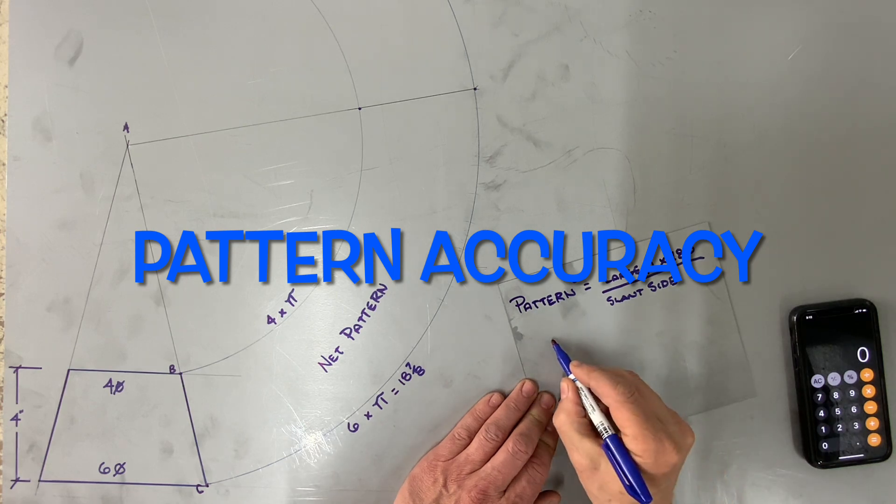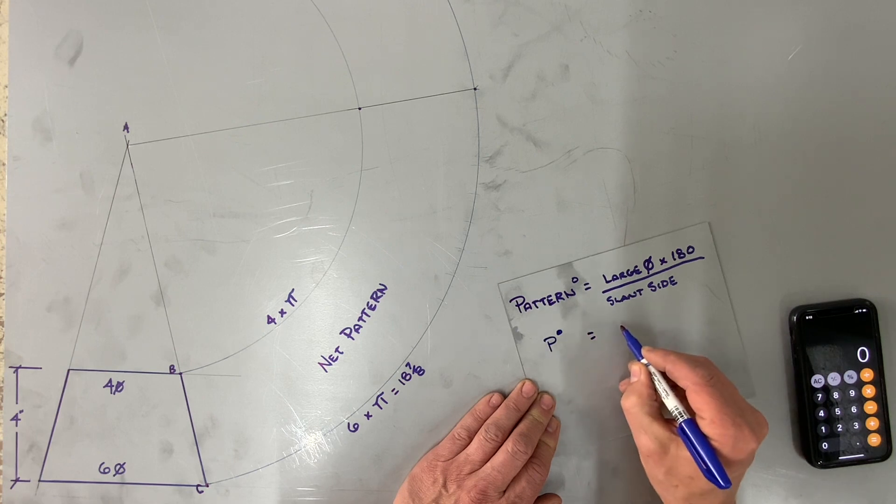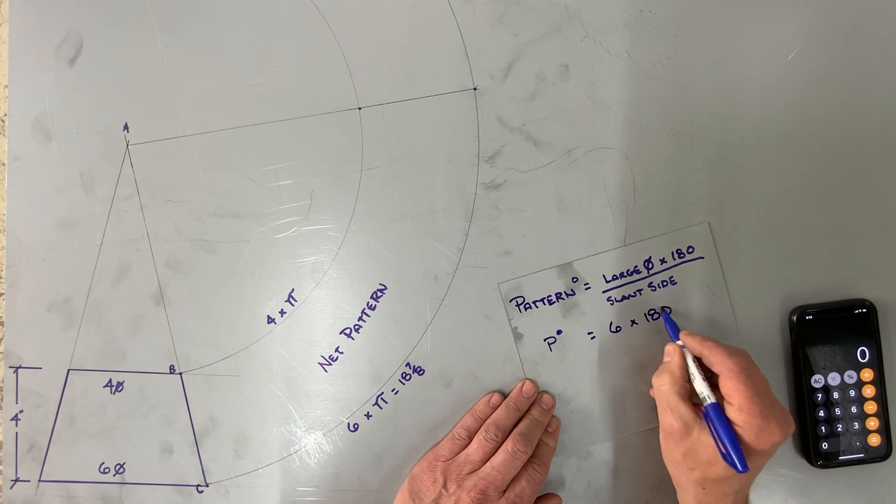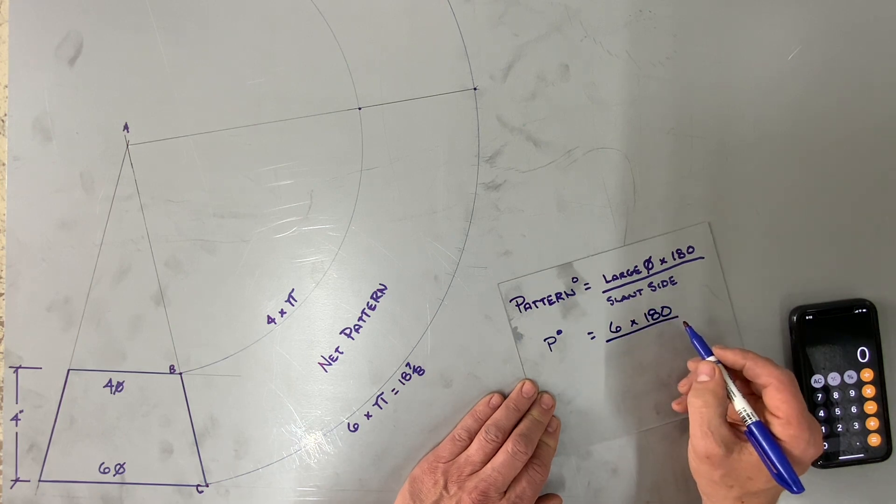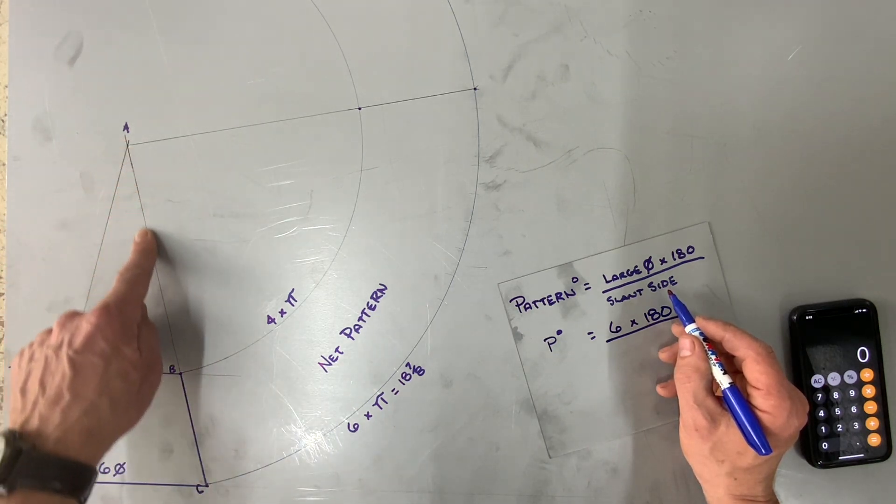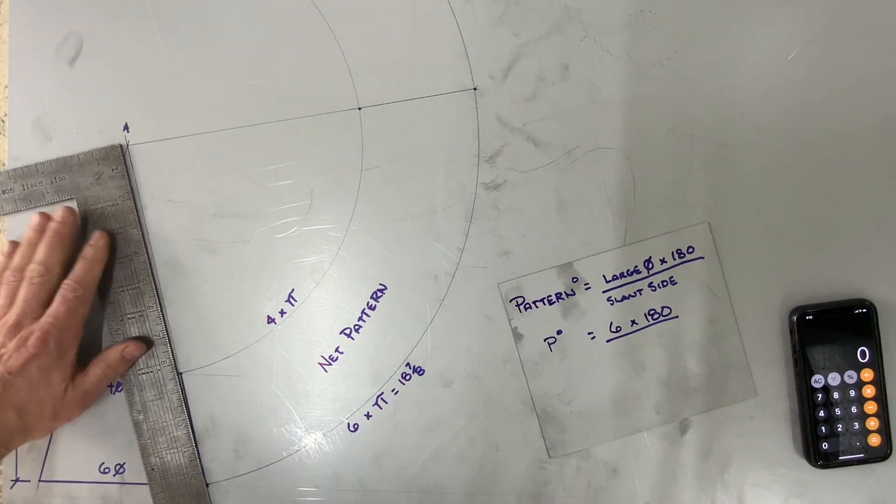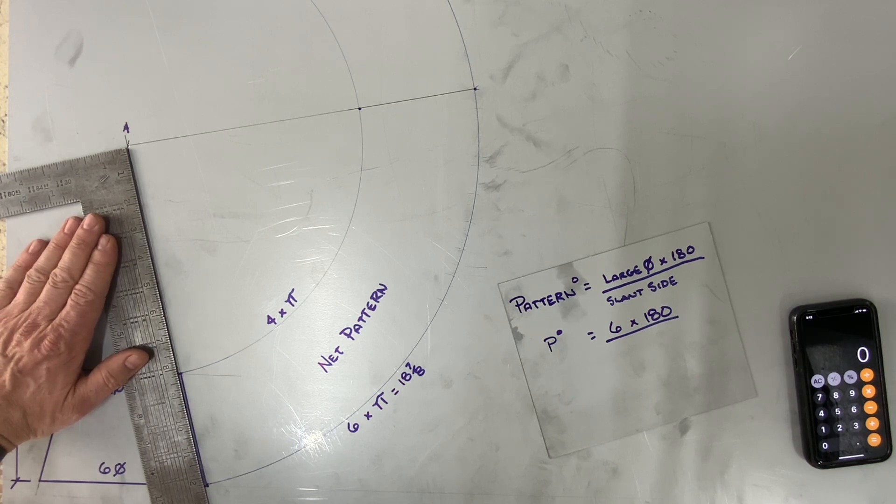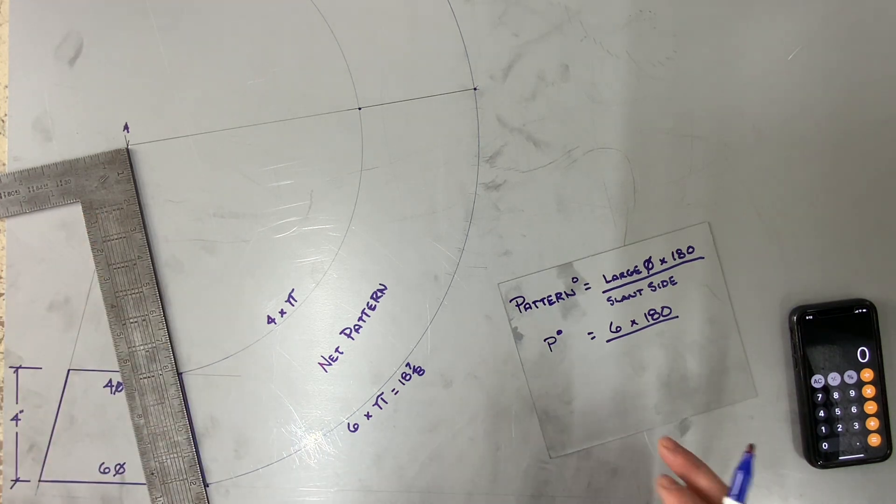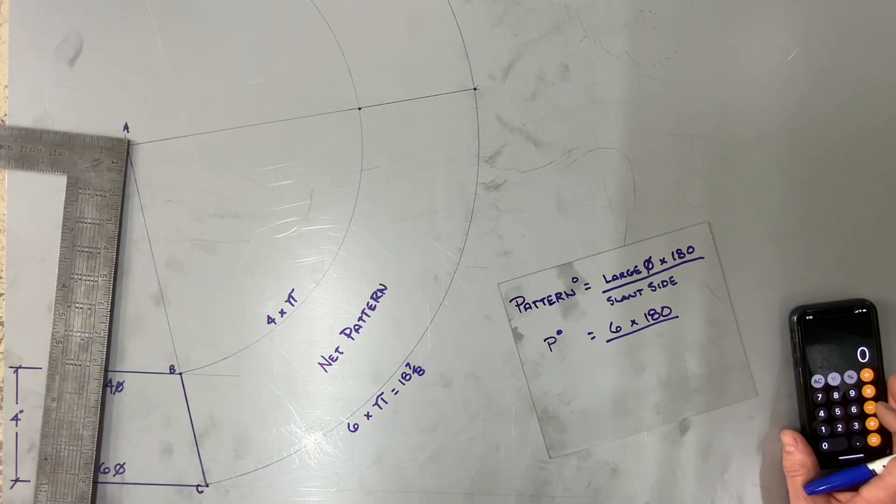Now another method of laying out a pattern is by finding the pattern degree or the pattern angle. But in this case I'm just going to show you how to verify if your pattern was done correctly. The formula states large diameter times one eighty divided by the slant side. Your slant side is right there. In this case you have to assume that it would not be in front of you. So if you do use the math to figure it out.